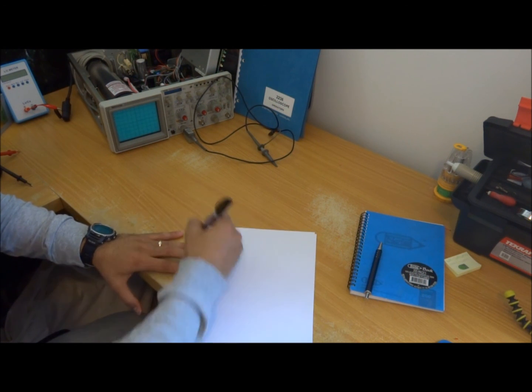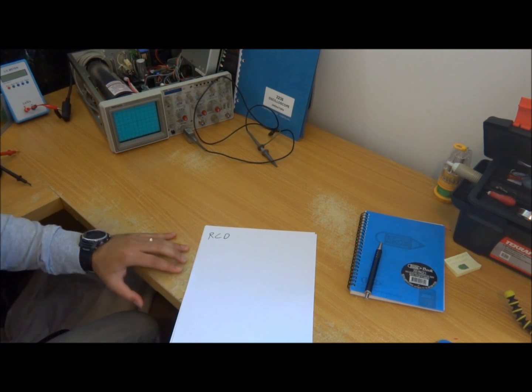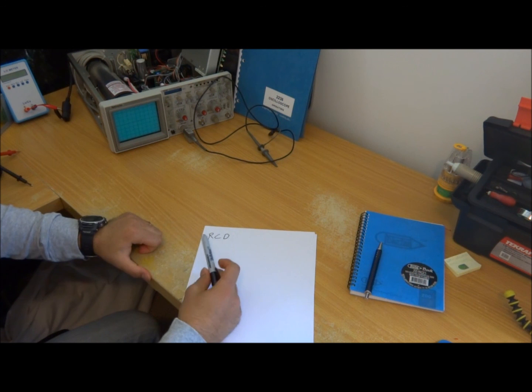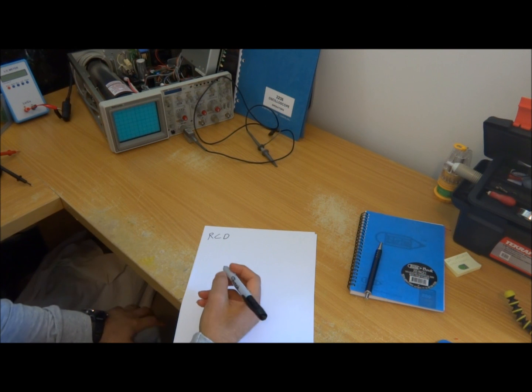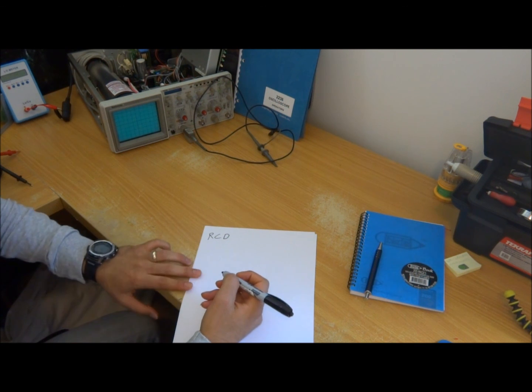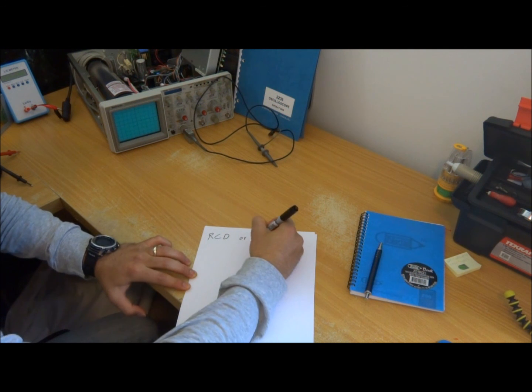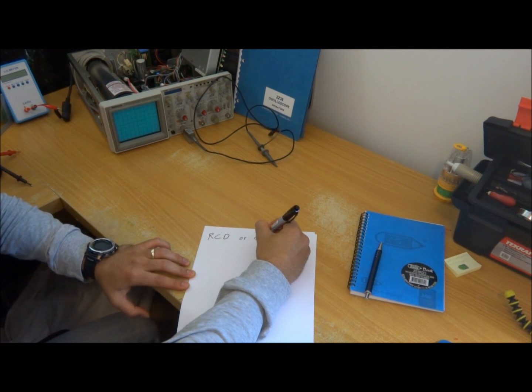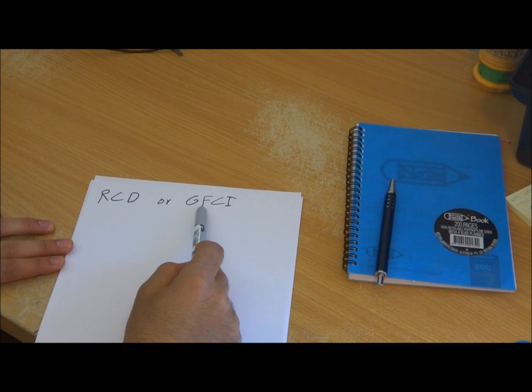As I said, in Australia they call these sort of circuit breakers RCD which stands for Residual Current Device or we also call it Safety Switches. In some other countries they've called it GFCI which stands for Ground Fault Current Interruptor or just Ground Fault Interruptor.